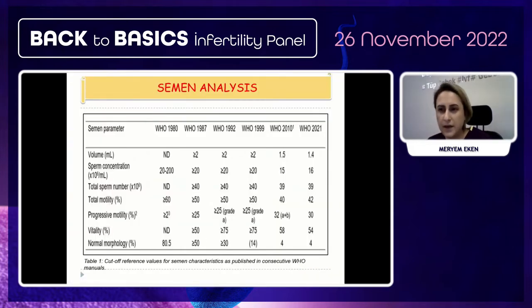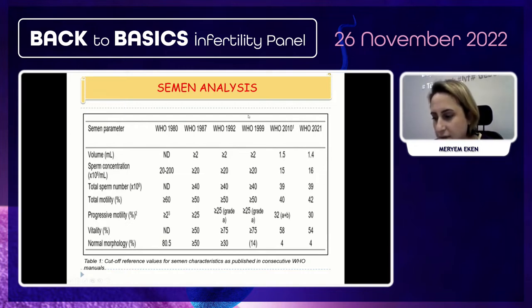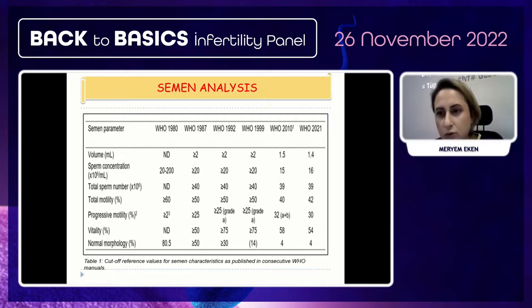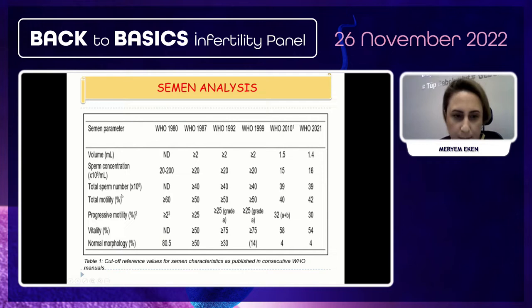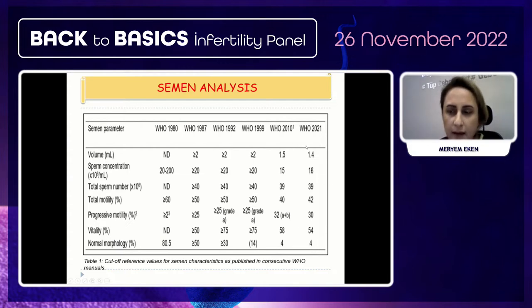Whenever our patients come to the clinic, we first request a semen analysis. Six versions of semen analysis criteria by the WHO have been published, including the latest version, WHO 6, which appeared in July 2021. We evaluate volume, sperm concentration, total sperm number, total motility, progressive motility percentage, vitality, and normal morphology according to WHO 2021 criteria.